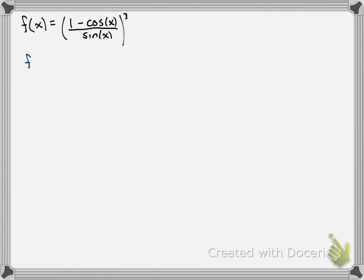This is going to be a chain rule. We can see we have an inside function in the parentheses. So the first thing we'll do is pull the exponent out front,